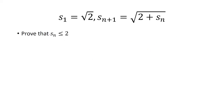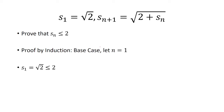Next we're going to prove that s_n is less than or equal to 2. Again we're going to use induction. For the base case, let n equal 0. Plugging in n equals 0 we have s₁, which is just the square root of 2, which is obviously less than 2.